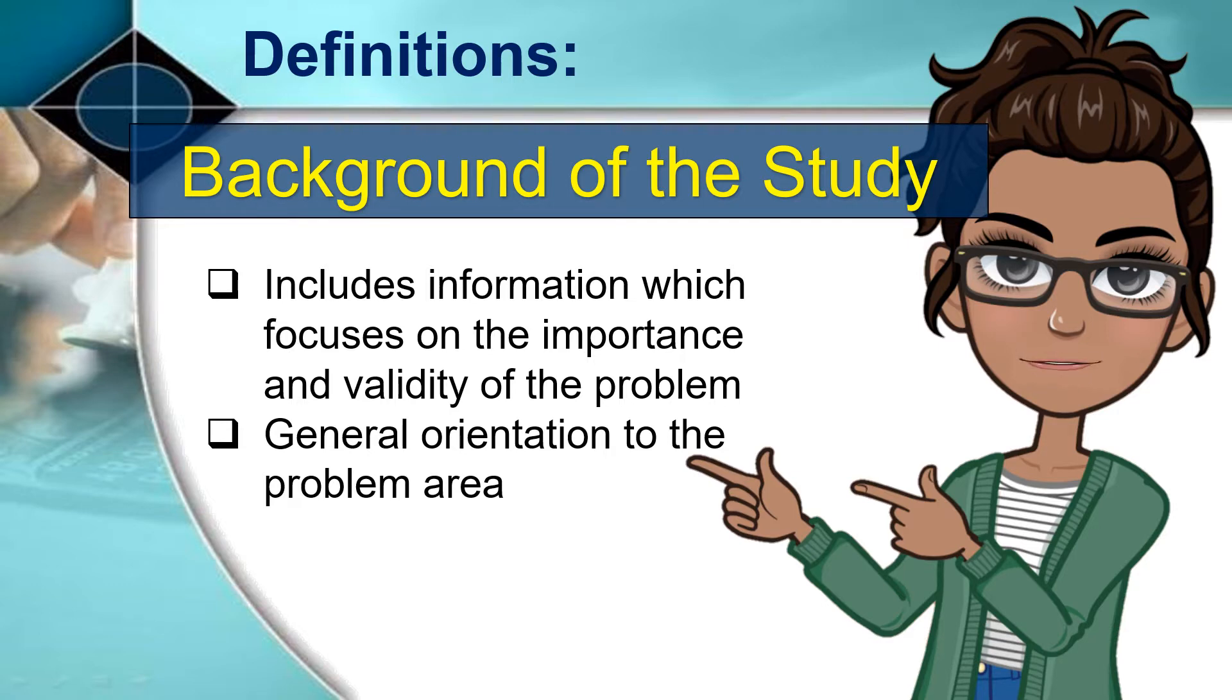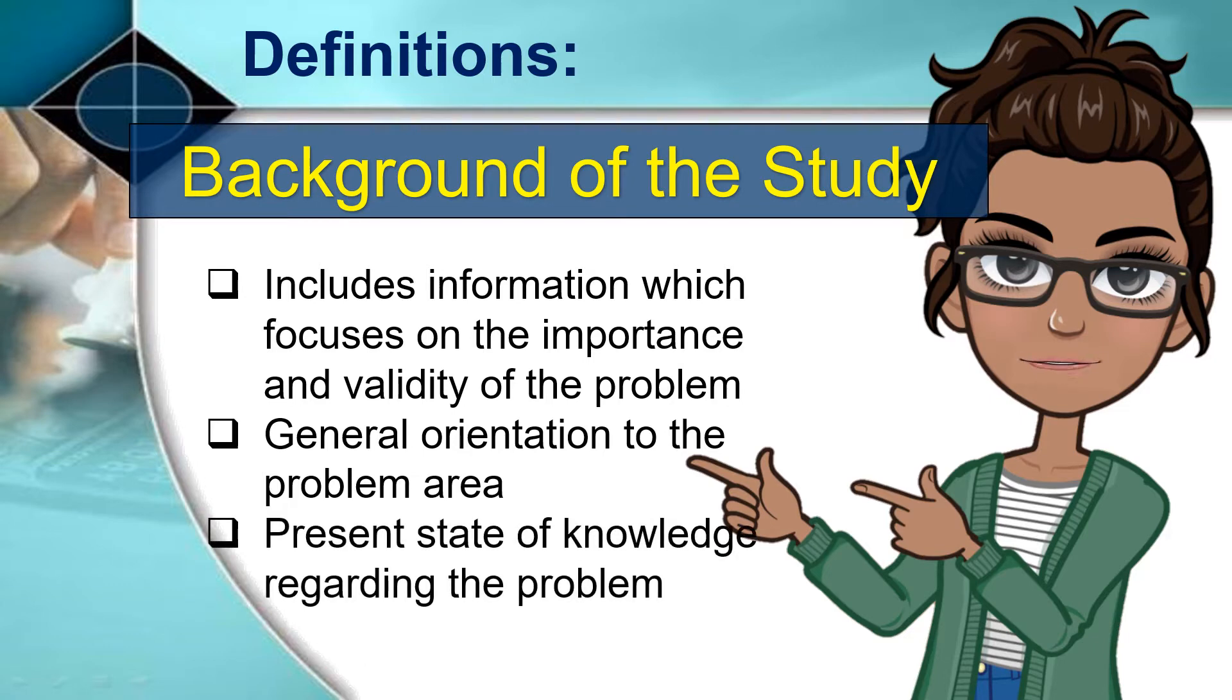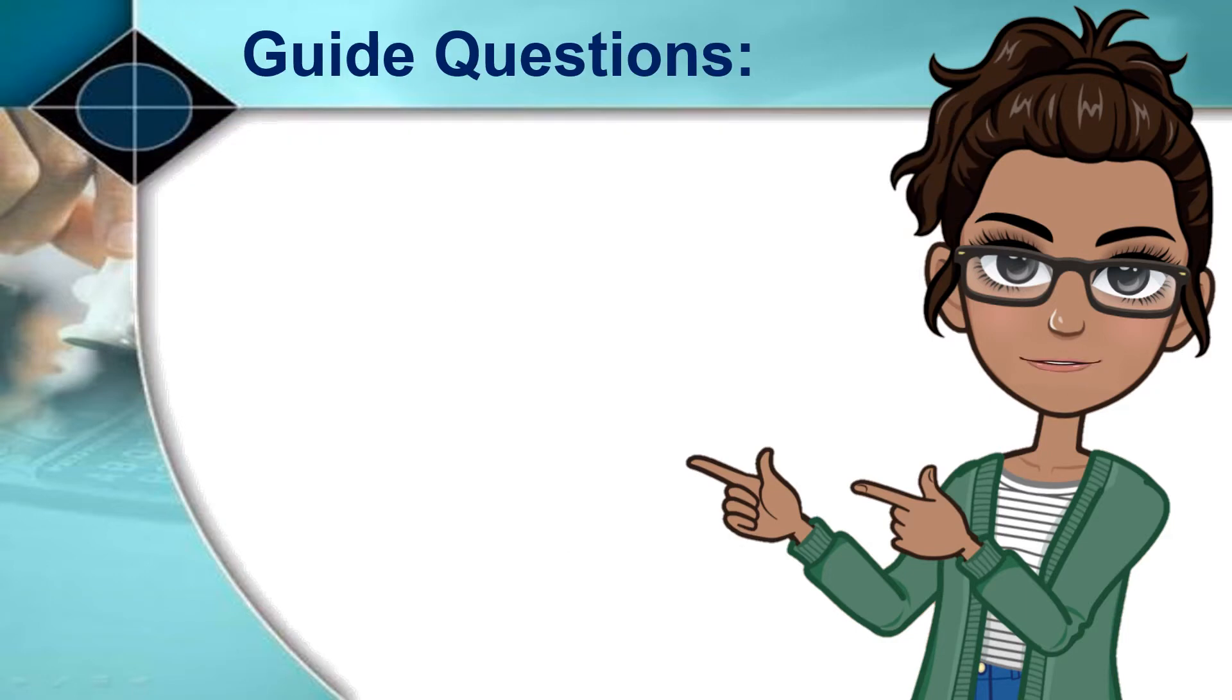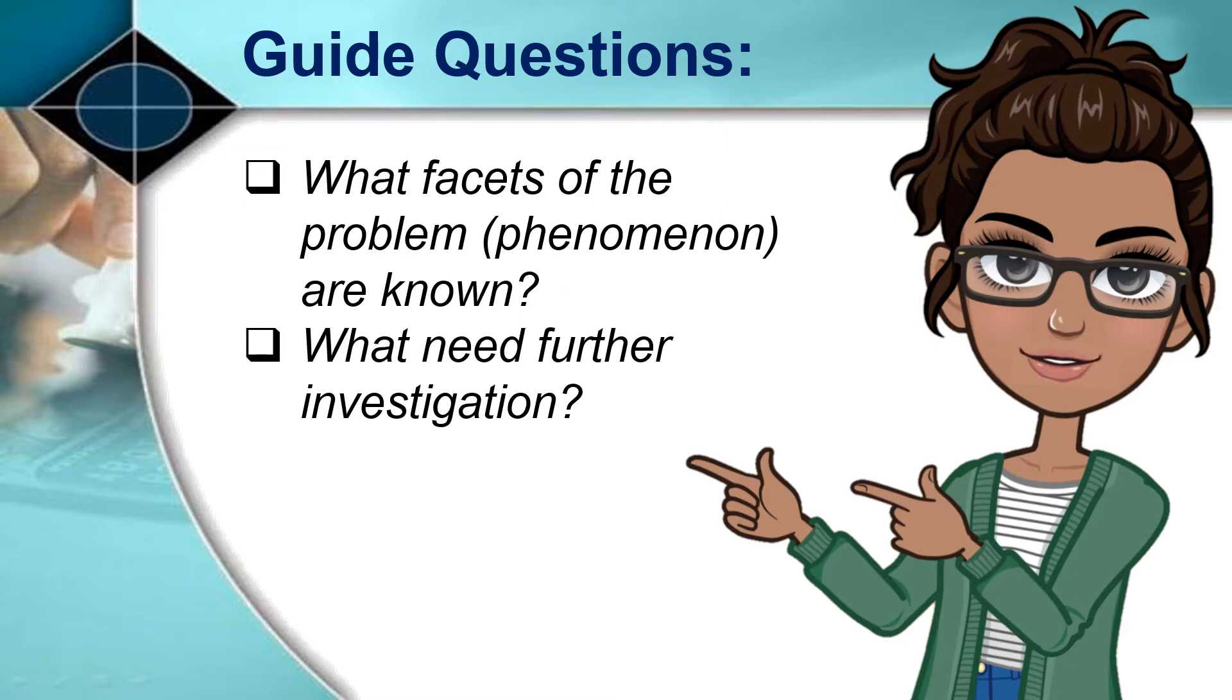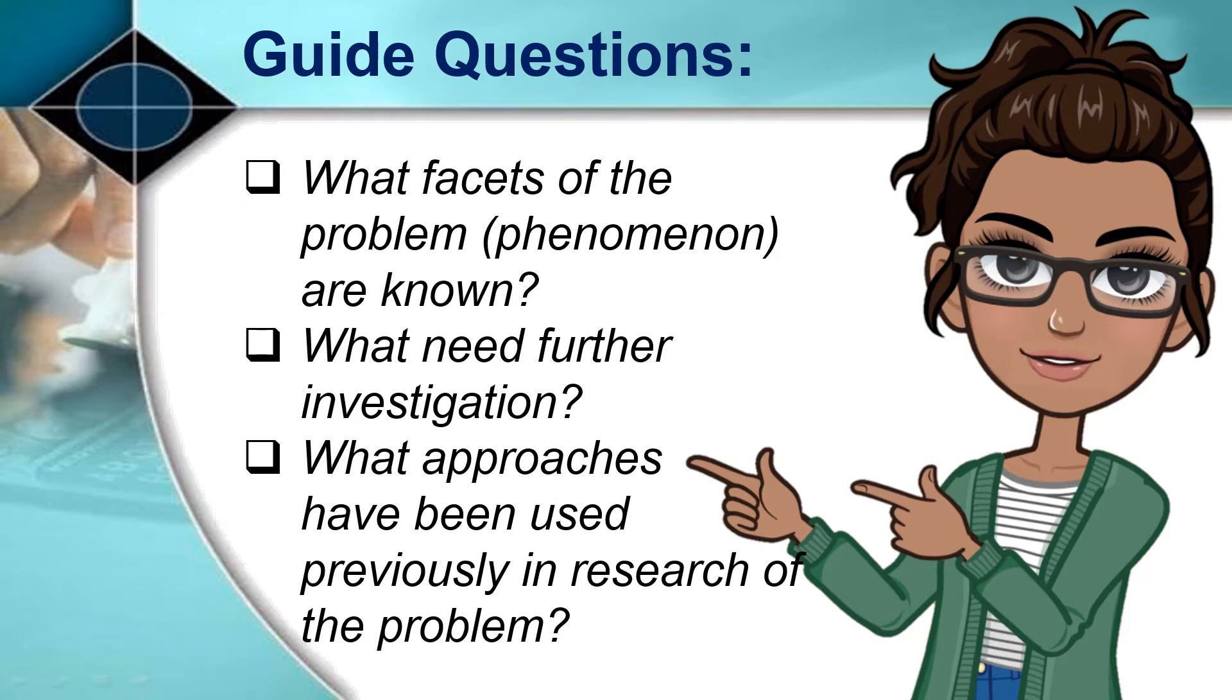This is the present state of knowledge regarding the problem. It should answer these questions: What facets of the problem or phenomenon are known and what need further investigation? What approaches have been used previously in the research of the problem? For a good background, the researcher can state the antecedents of the study, the reasons why this topic is proposed relative to previous studies.